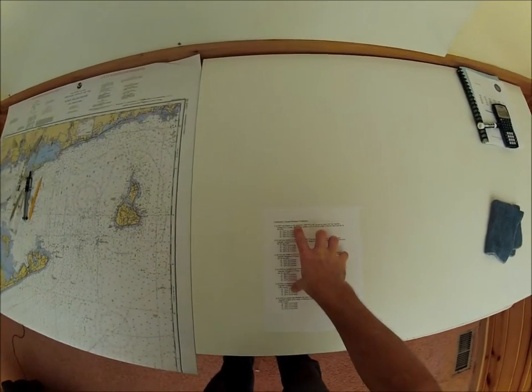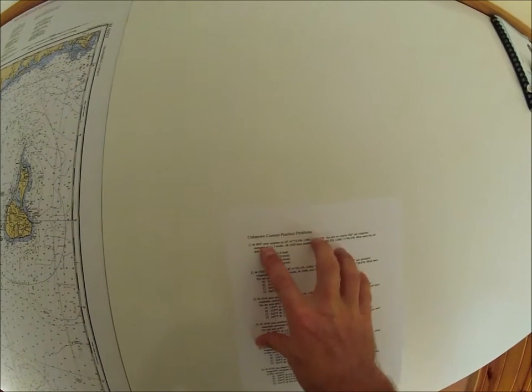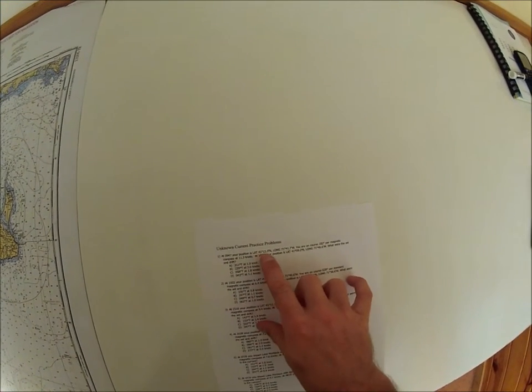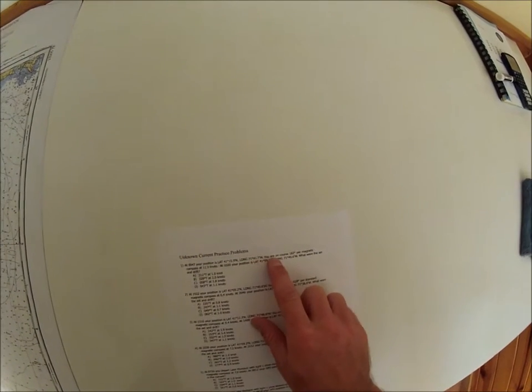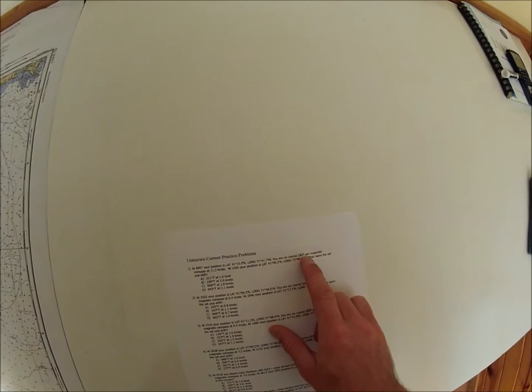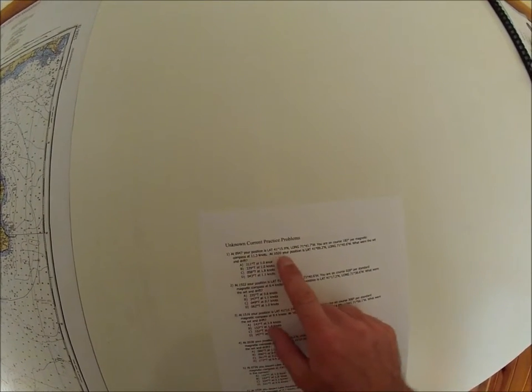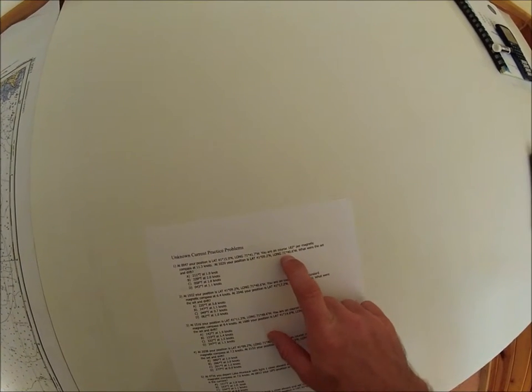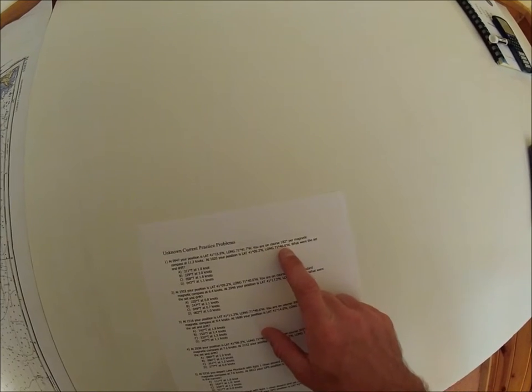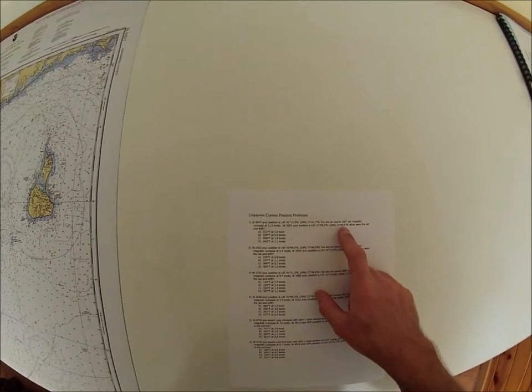Unknown current practice problem number one. At 947 your position is latitude 41 degrees 15.9 minutes, longitude 71 degrees 41.7 minutes. You are on course 182 per magnetic compass at 11.3 knots. At 1020 your position is 41 degrees 09.2 minutes, longitude 71 degrees 40.6 minutes. What were the set and drift?